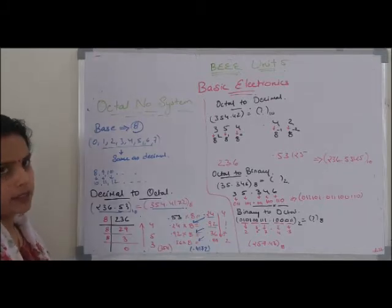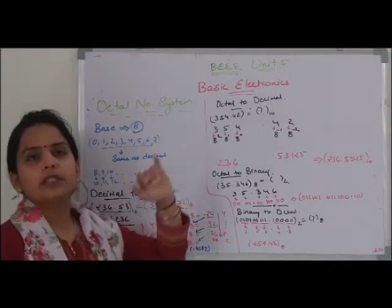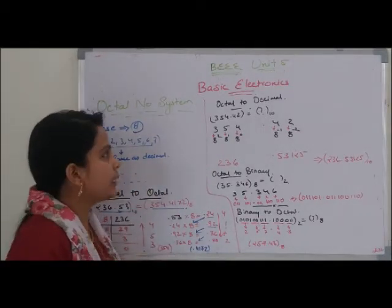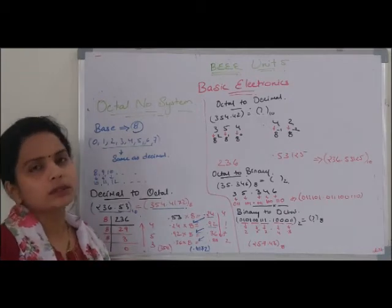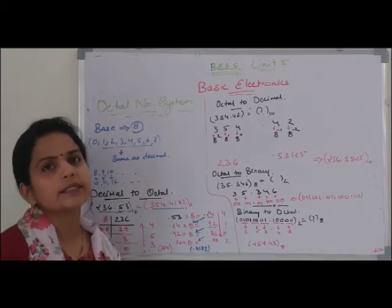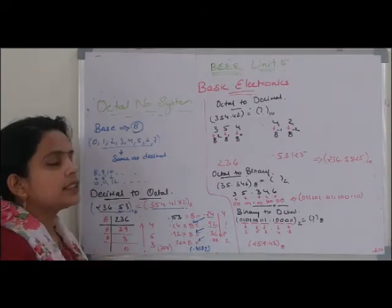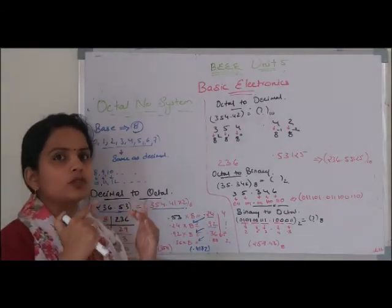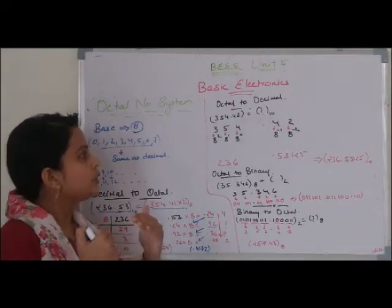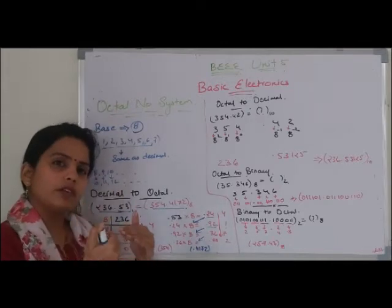अब हम octal to decimal number conversion पढ़ेंगे। जो octal to decimal number conversion है वो भी बहुत similar है binary से decimal number conversion के। Binary number system में मैंने आपको बताया था कि हम numbers को 2 to the power 0, 2 to the power 1, 2 to the power 2 से multiply करते हैं।